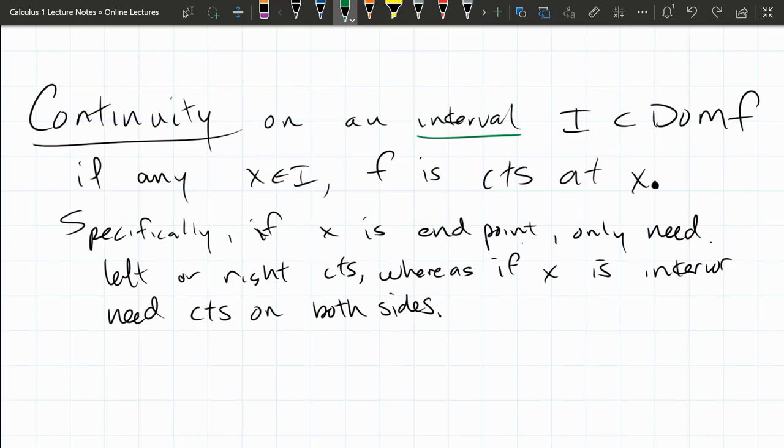Now, what does it mean to be continuous on an interval? For any x value in the interval, f is continuous at that x. So you're continuous on an interval if you're continuous for every x value inside the interval.